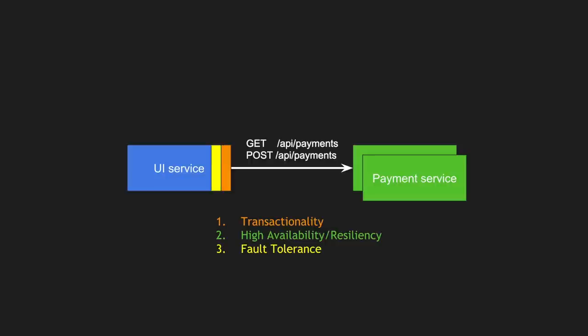IRCTC is a good example of a highly available but not fully reliable system. For fault tolerance, the UI service must handle re-triggering requests when the payment service is down, and errors must not cascade to the UI — users should never see an unknown stack trace. For reliability, the payment service integrations must work correctly every single time so that transactions are always successful and not intermittently failing.